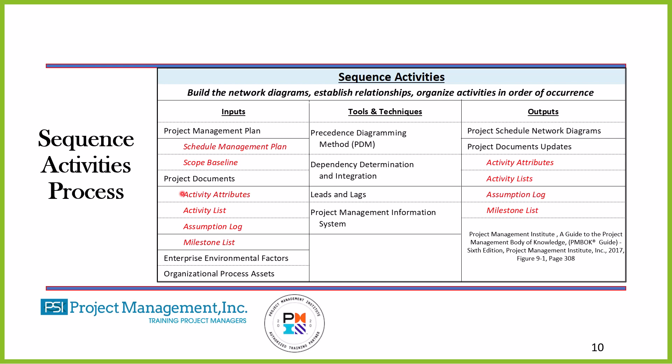Another important thing is the assumptions log — what are the assumptions I or my team have made regarding this project? Assumptions are things we believe to be true. The milestone list, if we have one at this point, would also be an input into Sequence Activities. The tool is Precedence Diagramming Method (PDM) — that's where we create our network diagram. The dependency determination covers mandatory, discretionary, and external. Leads and lags: if it's a lead, activity B starts before activity A is finished. If it's a lag, activity A finishes, no work is being done, then activity B starts.